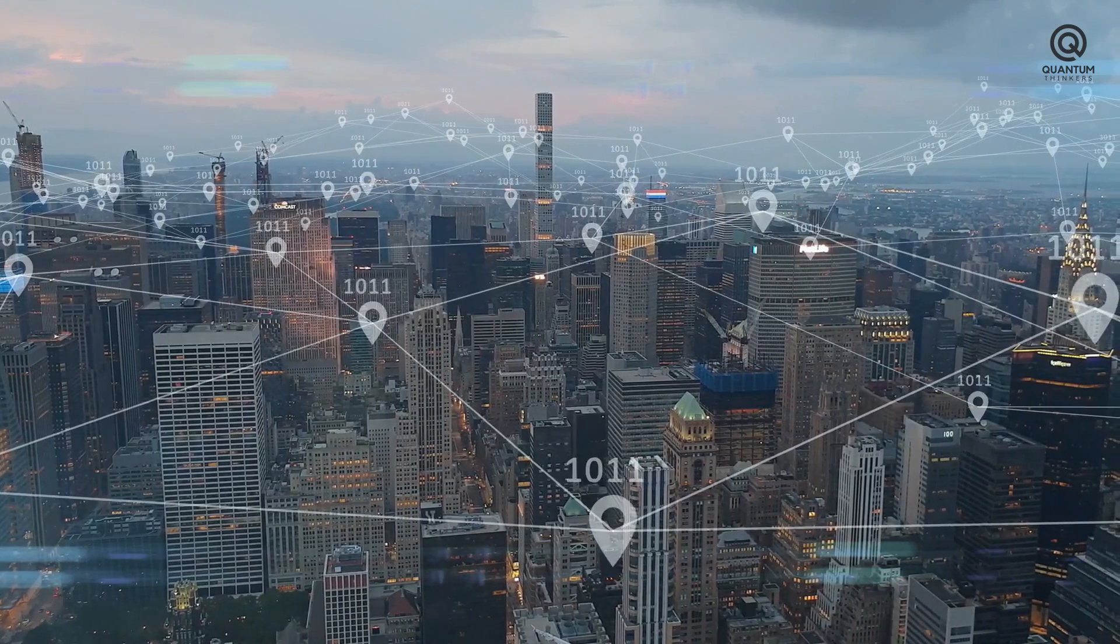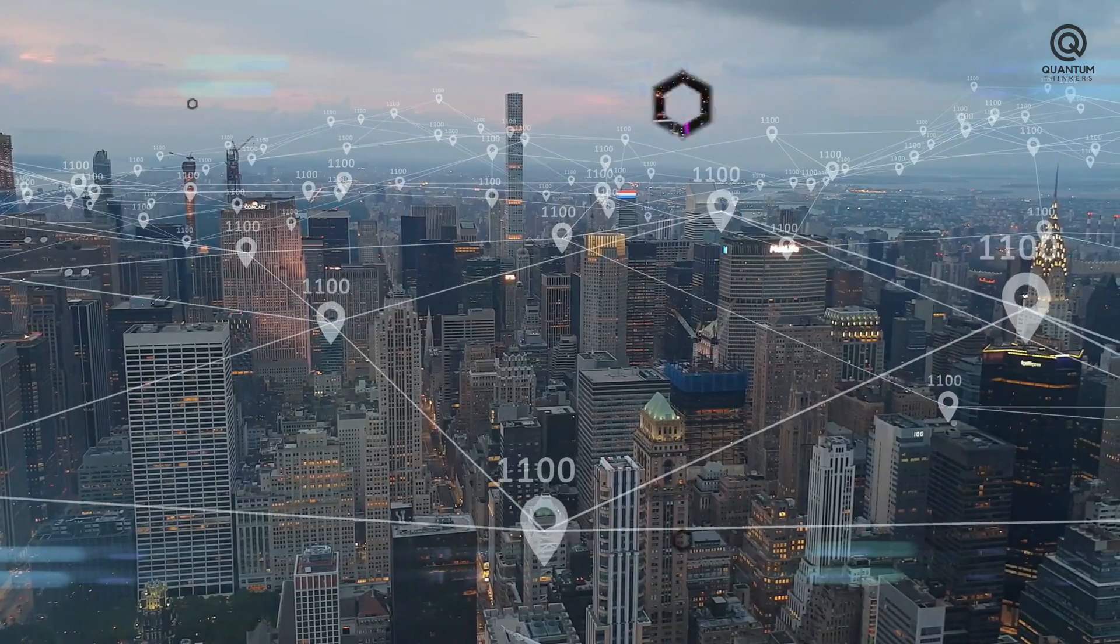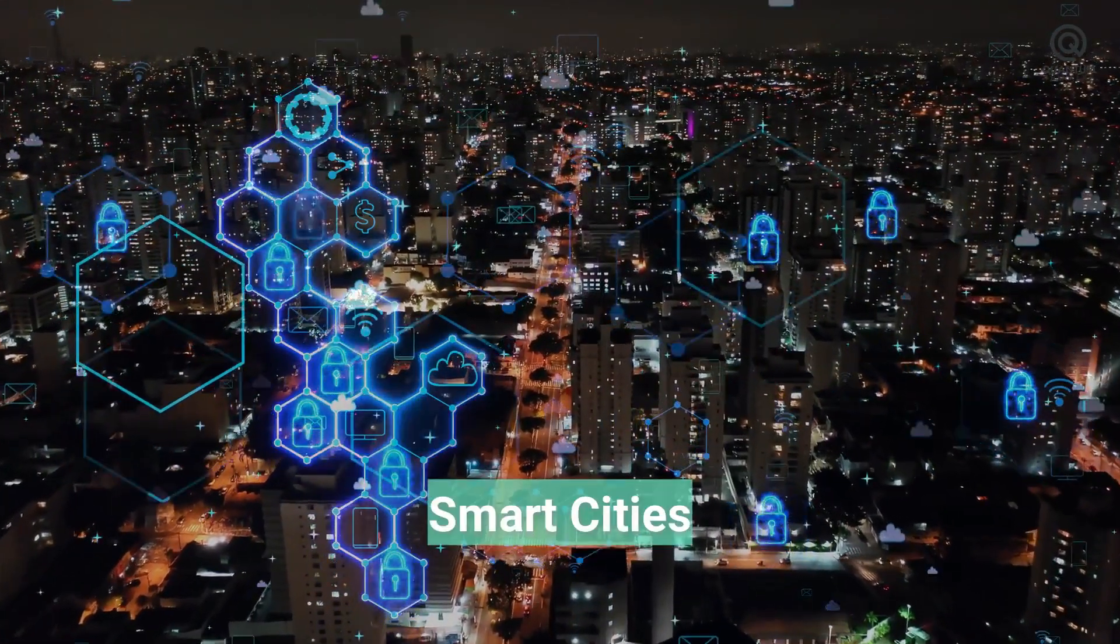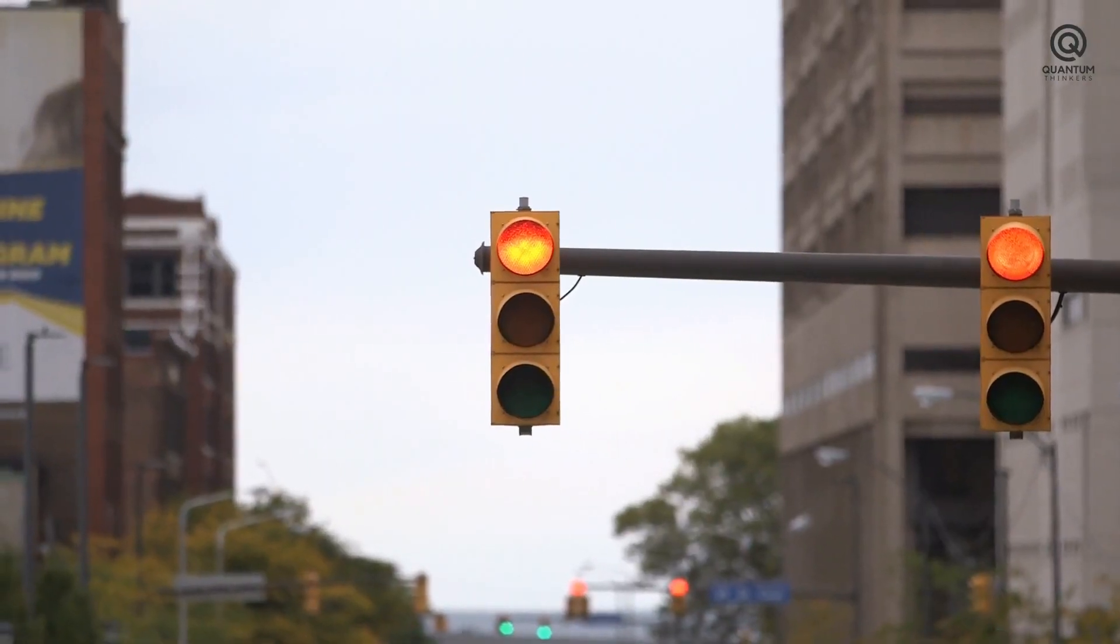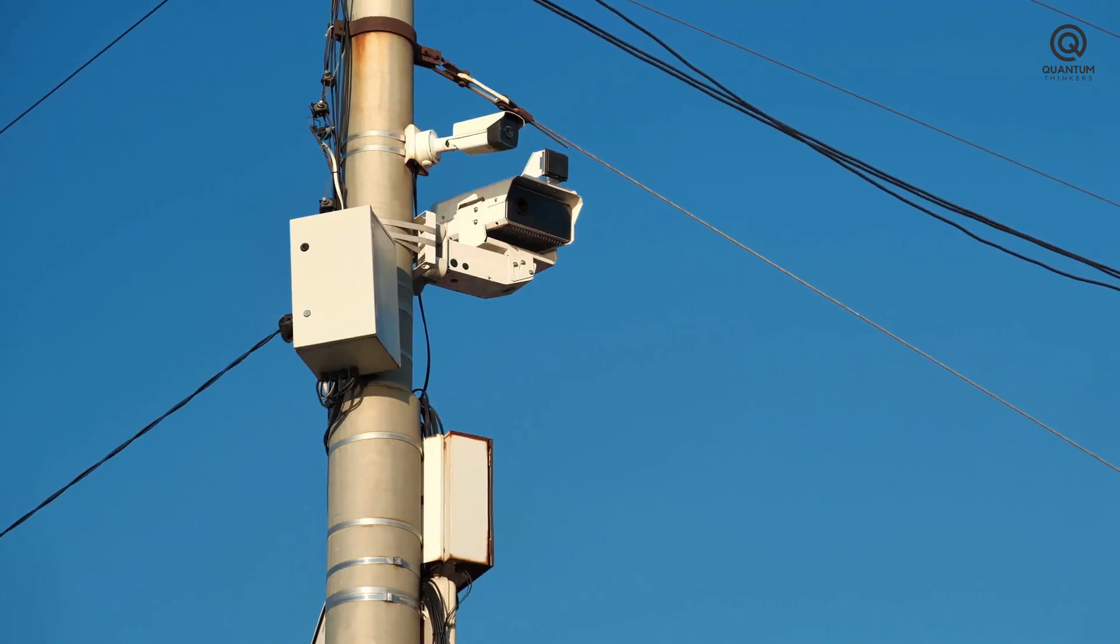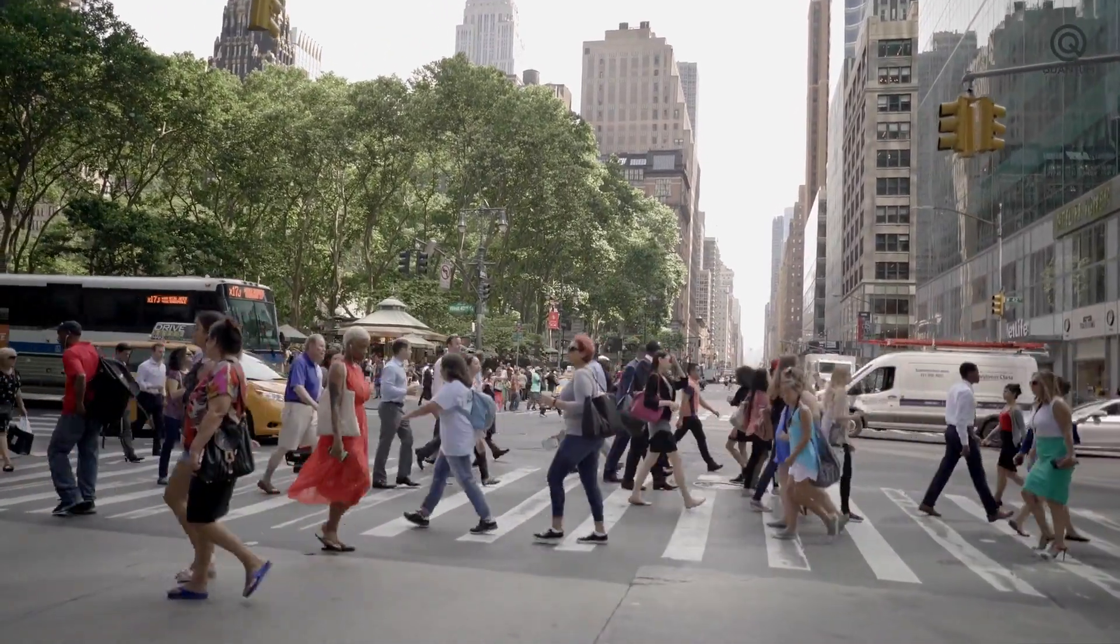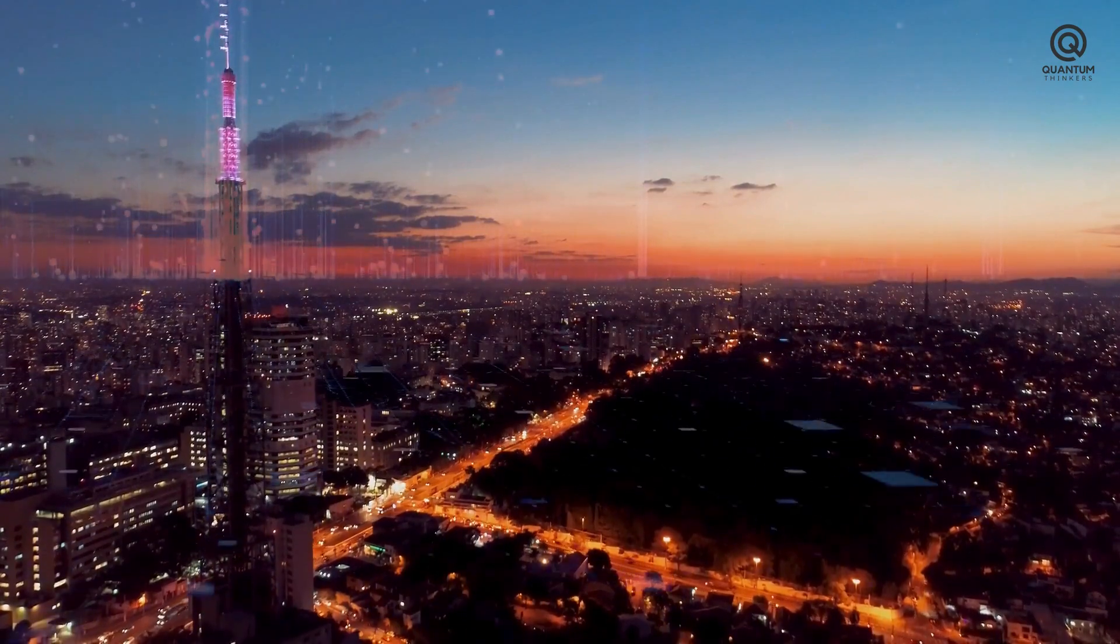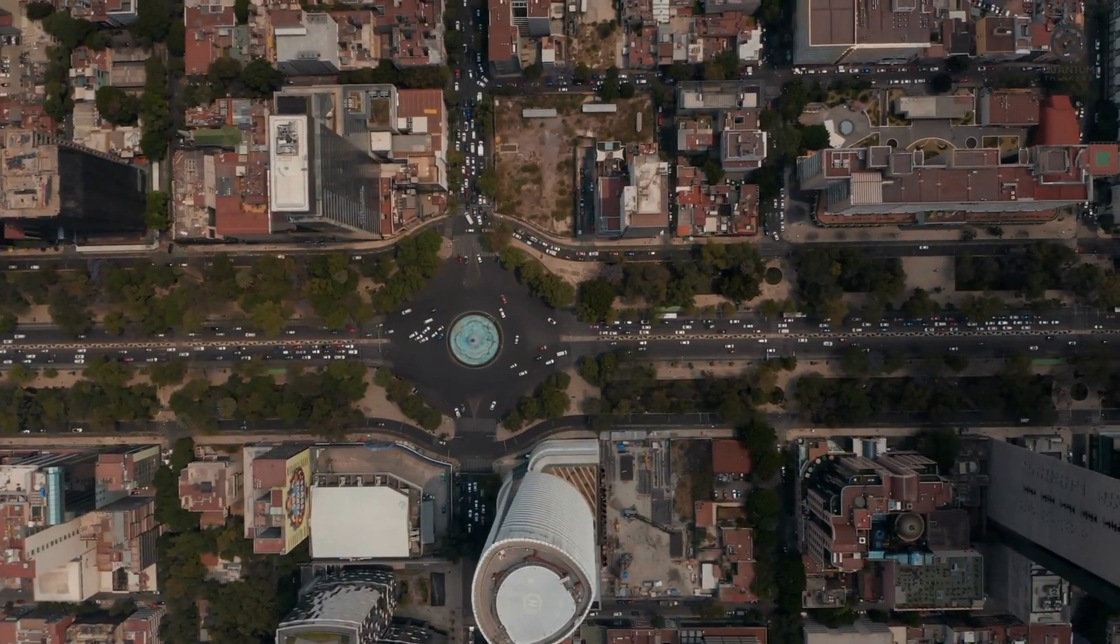Now, imagine a city where traffic flows seamlessly, energy is conserved intelligently, and safety is enhanced through predictive analytics. This is the promise of smart cities powered by AI. By utilizing AI-powered systems, traffic signals, streetlights, and security cameras can communicate and optimize operations, resulting in seamless data flow and improved city management. This integration leads to substantial efficiency gains, reducing congestion and enhancing transportation systems.